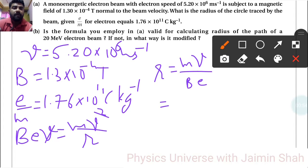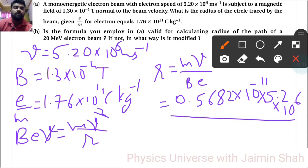Now, e/m is given, so M/e is the reciprocal of that: 1/1.76, which is 0.5682 × 10⁻¹¹. Multiplying by V, that's 5.2 × 10⁶, divided by B = 1.3 × 10⁻⁴.